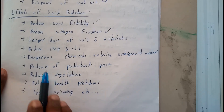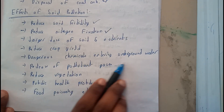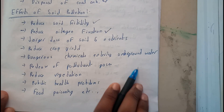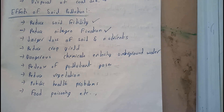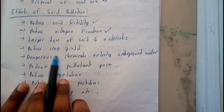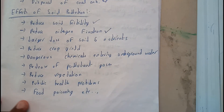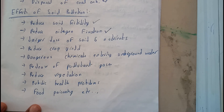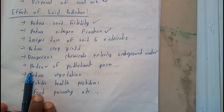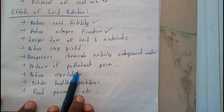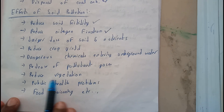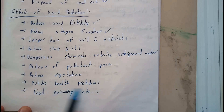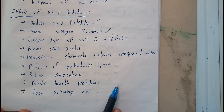Dangerous chemicals can enter underground water when soil is not fertile or strong enough, which can affect the whole world. Soil pollution also increases pollutant gases, reduces vegetation, and causes public health problems.